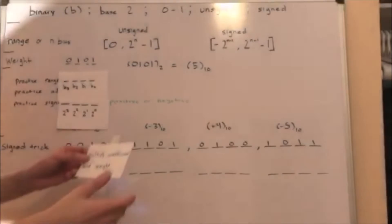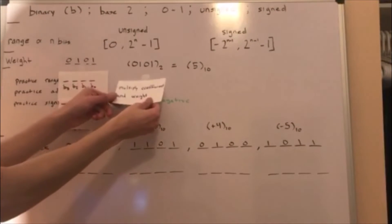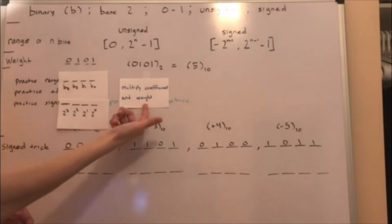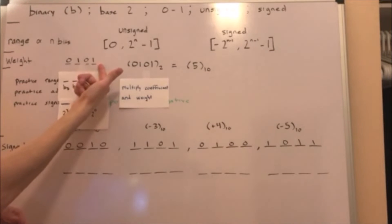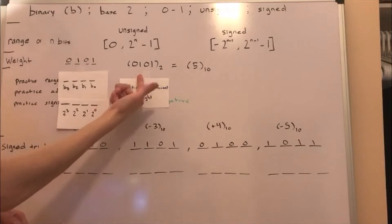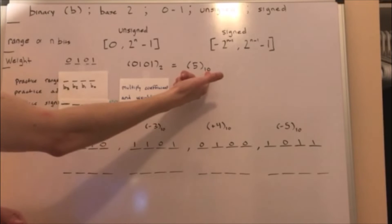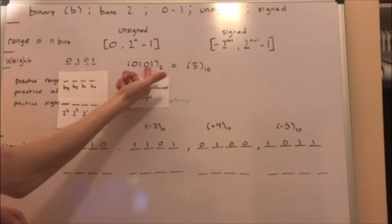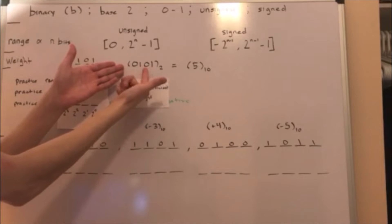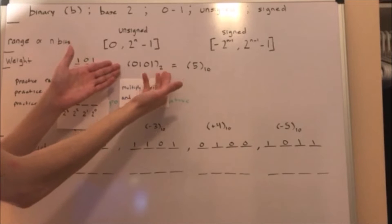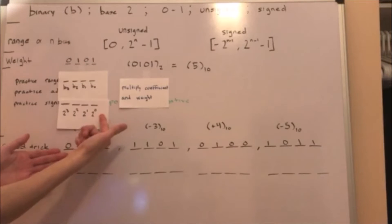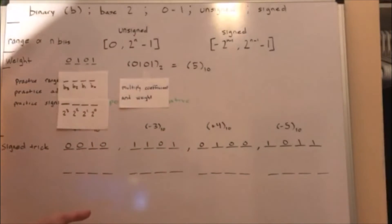This is how you use 4-bit binary numbers. You multiply the coefficient and the weight — here's your coefficient and here's the weight. That's how you get 5 in decimal using a 4-bit binary number. This is your 4-bit binary base 2 number, and if you multiply the coefficient and the weight, you get 5 in decimal.